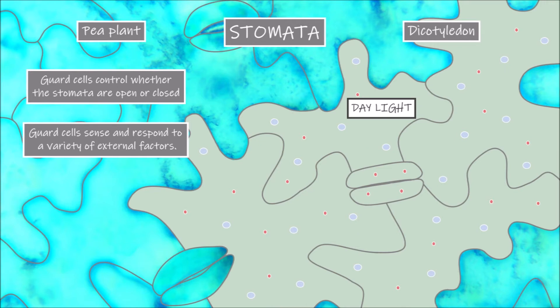This increases the potassium solute concentration in relation to the water concentration inside the guard cells, decreasing the osmotic potential, and as a result water also moves into the guard cells. As this water moves into the guard cells the turgor pressure within the cell increases as well as the cell volume, which causes the cells to swell and the stomatal pore to open.